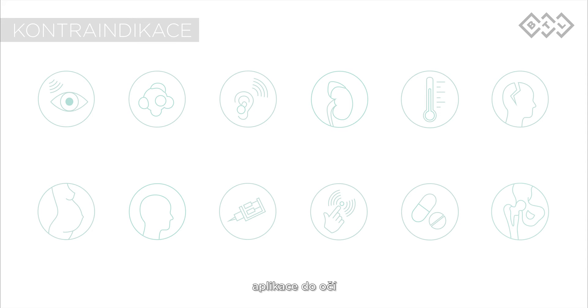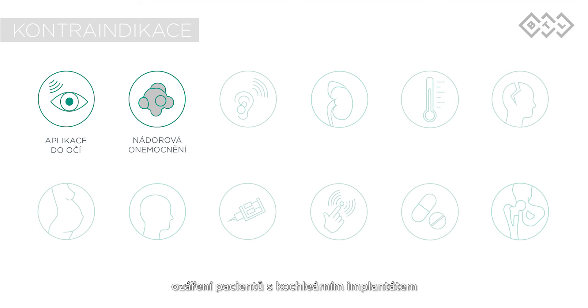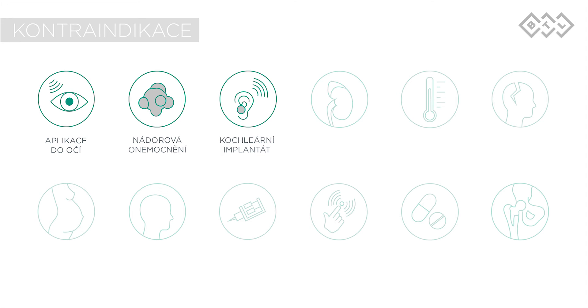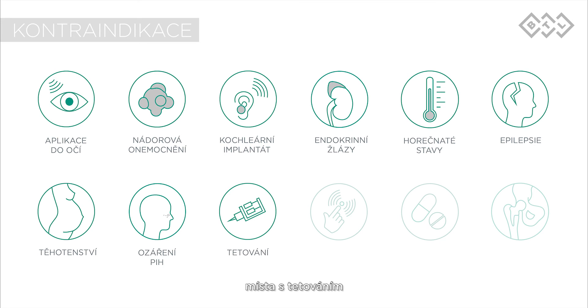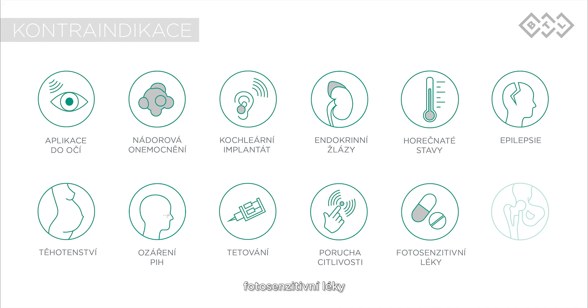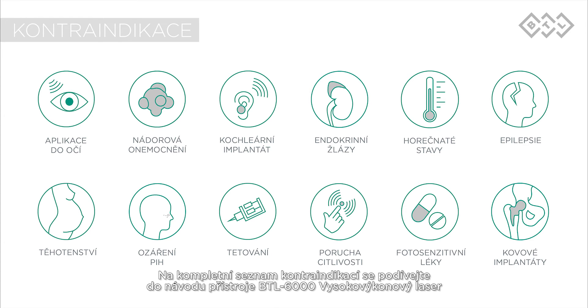Ask the patient about possible contraindications to the BTL high intensity laser. The basic contraindications are: applications in the eye area, humerous diseases, irradiation of patients with cochlear implants, irradiation of endocrine glands, patients with febrile conditions, epilepsy, pregnancy, irradiation of freckles, sites that have tattoos, sensory deficit, photosensitive medication, and application above metallic implants. For a full list of contraindications, see the BTL 6000 high intensity laser manual.